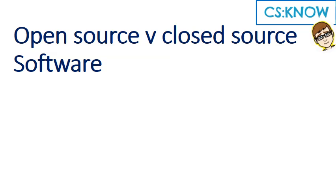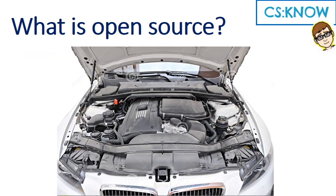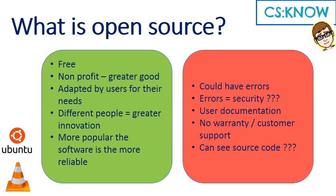Open source and closed source software — so what's the difference? Fundamentally, open source is this: you can see under the bonnet. You can see what's going on, you can see the source code. We can see the source on it, hence its name: open source software.